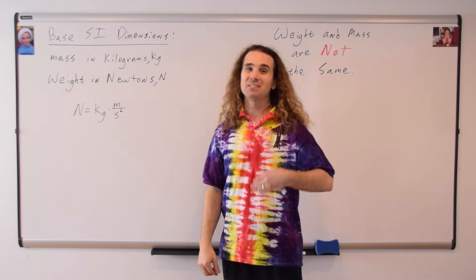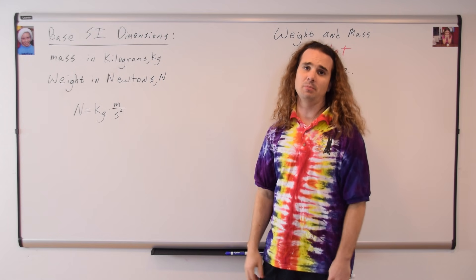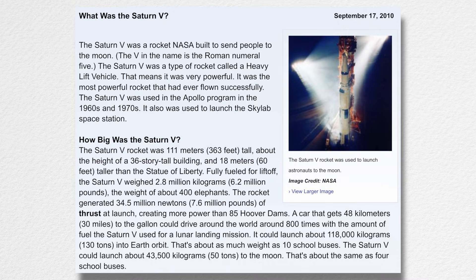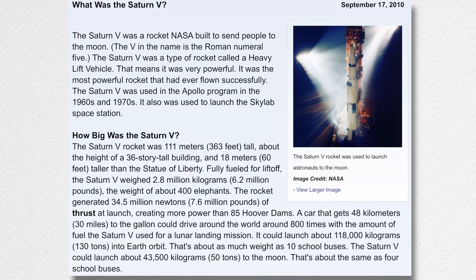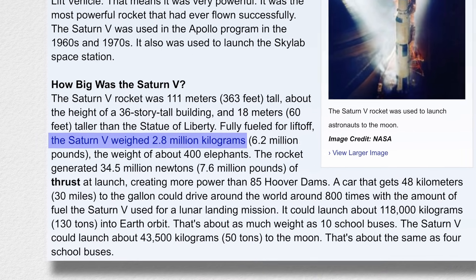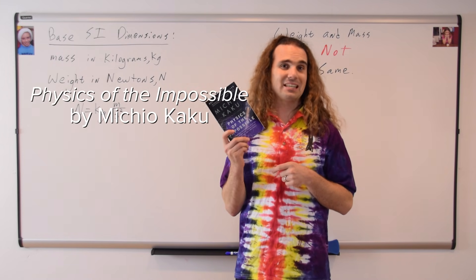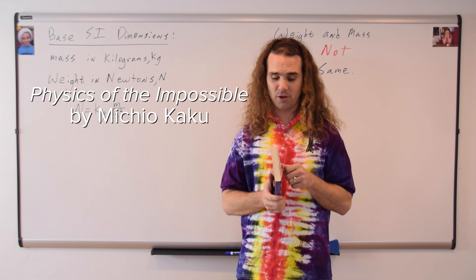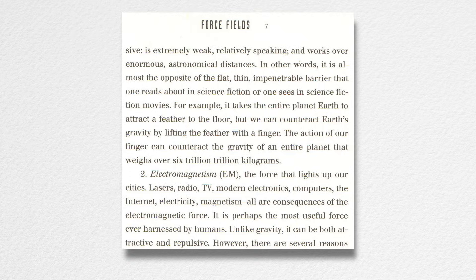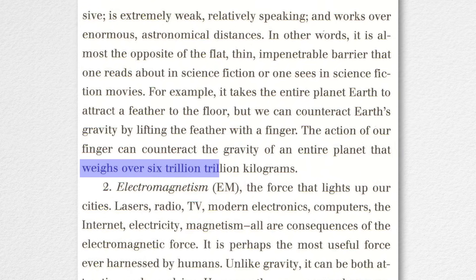However, sometimes in the media, weight will be given in kilograms, which we know cannot be correct. Here are some examples. From NASA's website about the Saturn V rocket: fully fueled for liftoff, the Saturn V weighed 2.8 million kilograms. That's right, from NASA — weight in kilograms. From the book Physics of the Impossible by Michio Kaku, a famous theoretical physicist and bestselling author, he refers to the Earth as a planet that weighs over 6 trillion trillion kilograms.